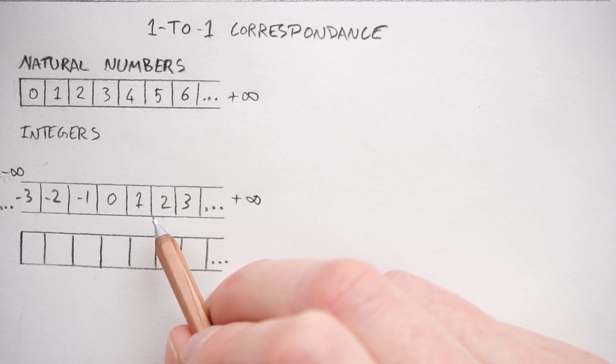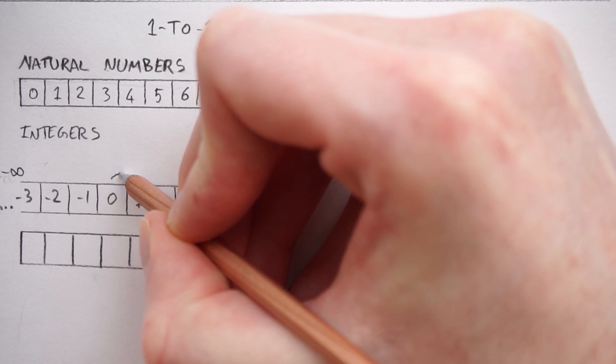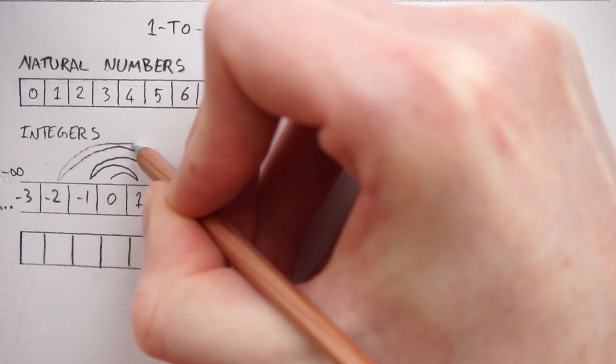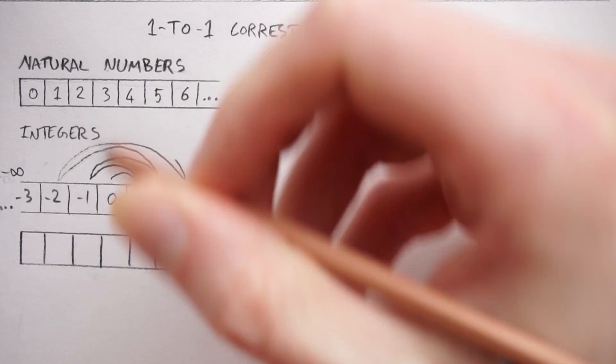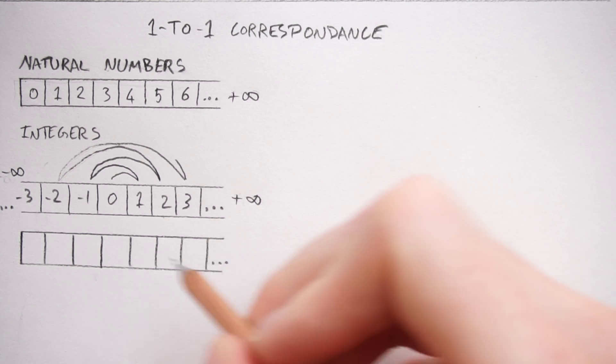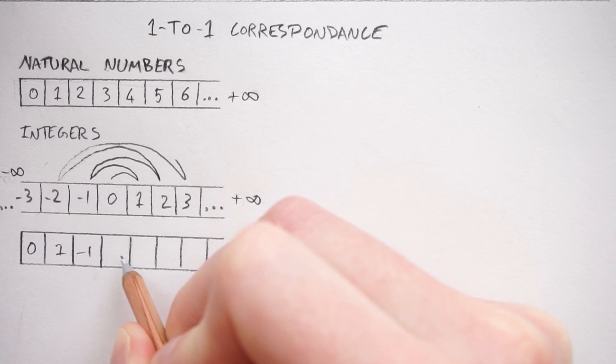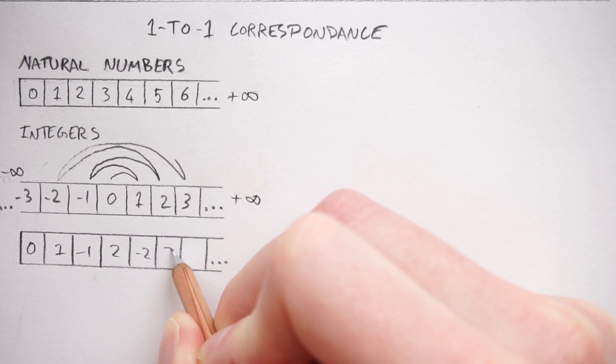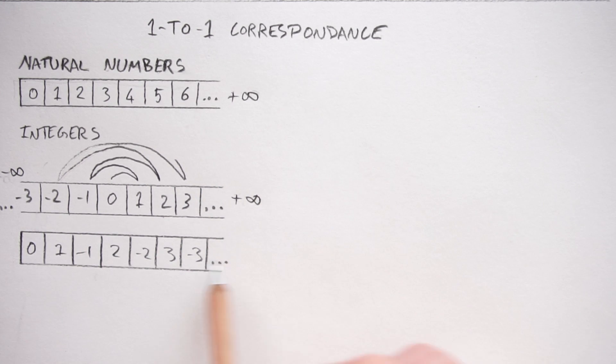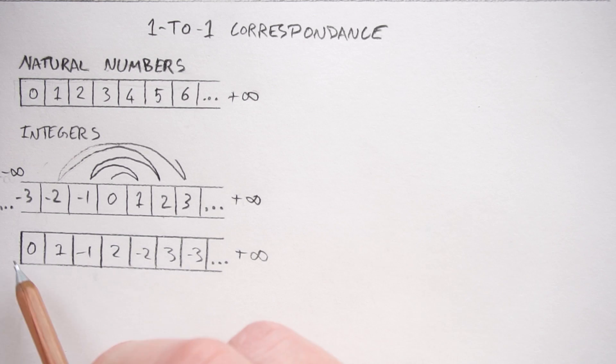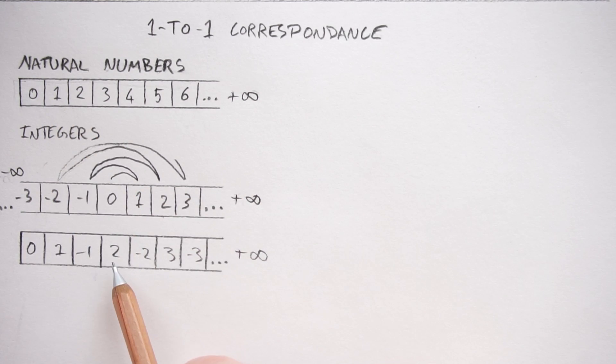One way of explaining George Cantor's argument is if you can join these numbers all up with a single line, then you can re-express these numbers kind of like this and so on. You can start these from zero and then go to one and then minus one and then two and then minus two, three, minus three. And now you've got a list of numbers which still goes off to positive infinity, but it starts at zero like the natural numbers.